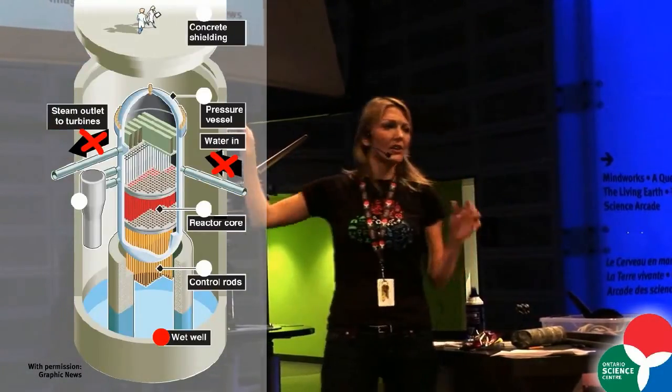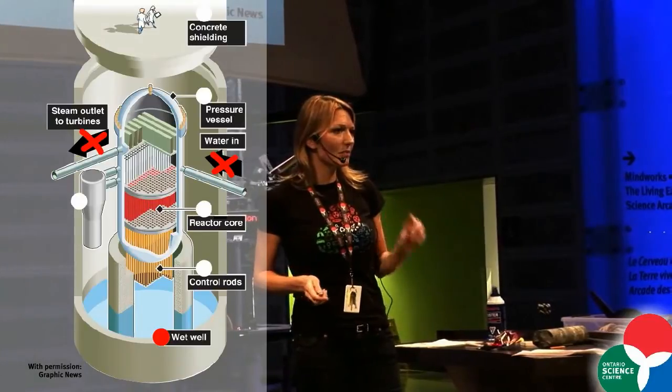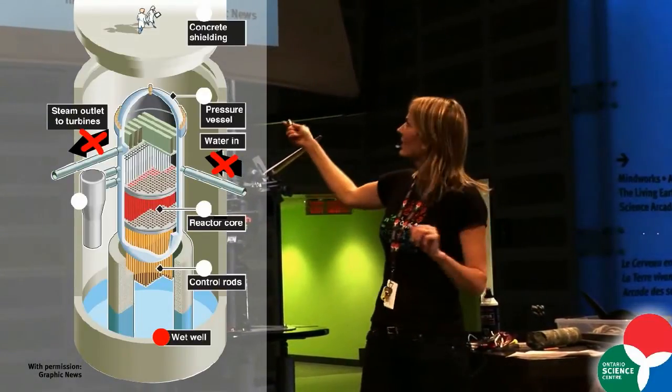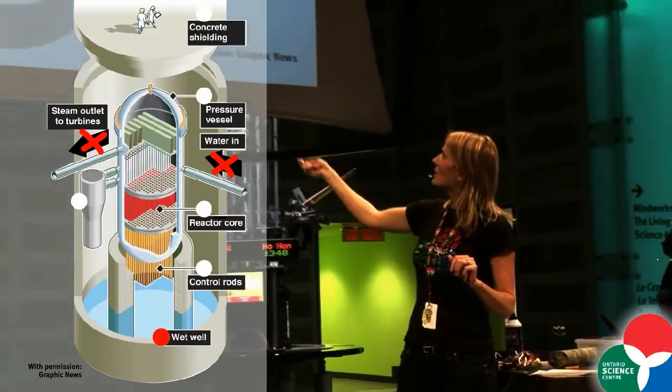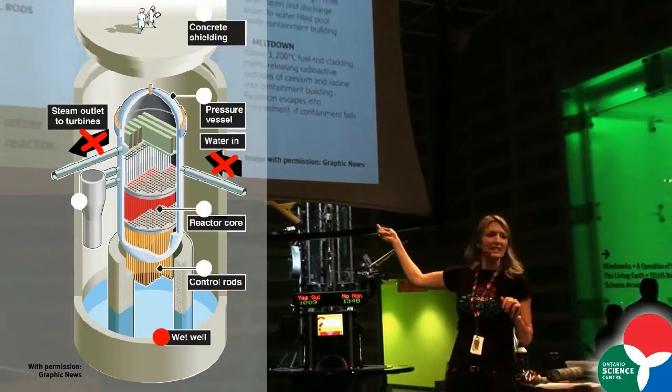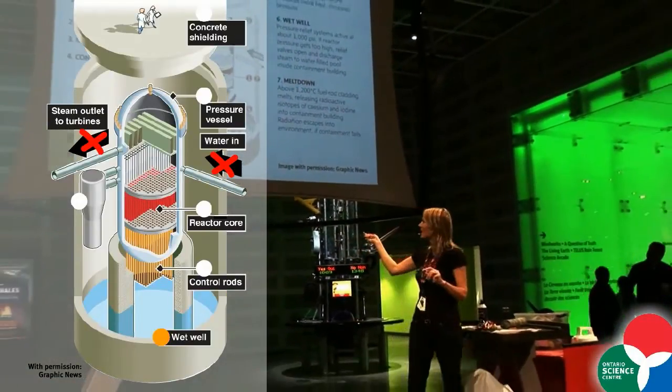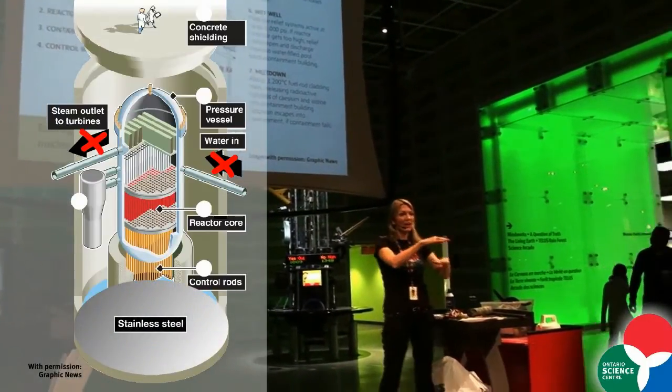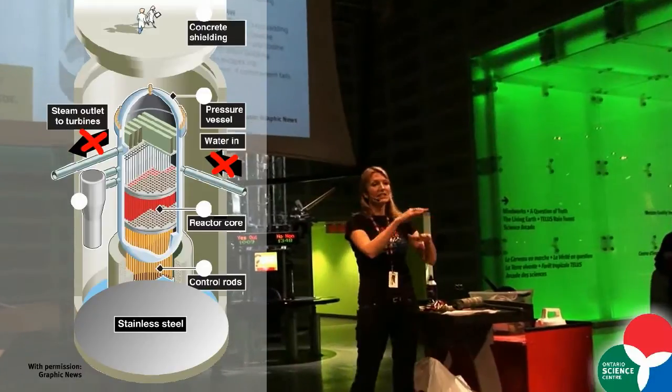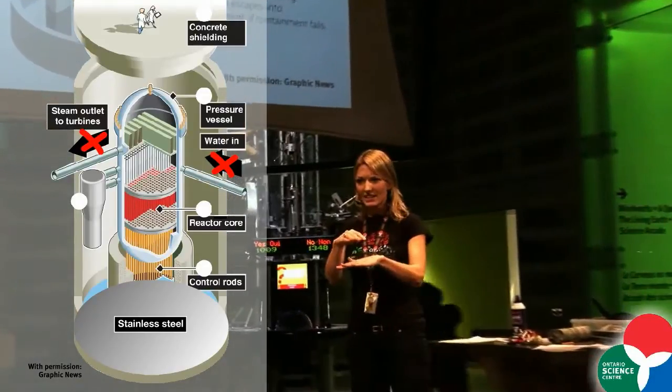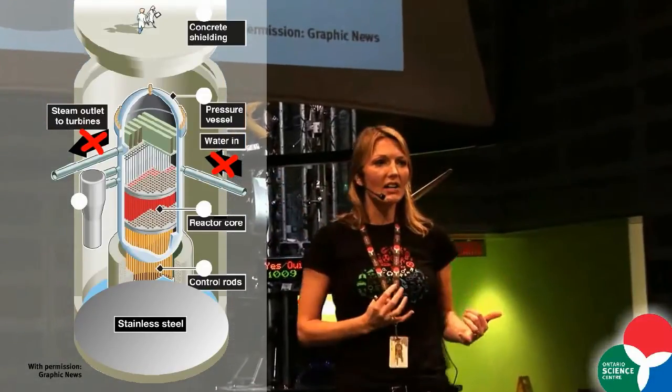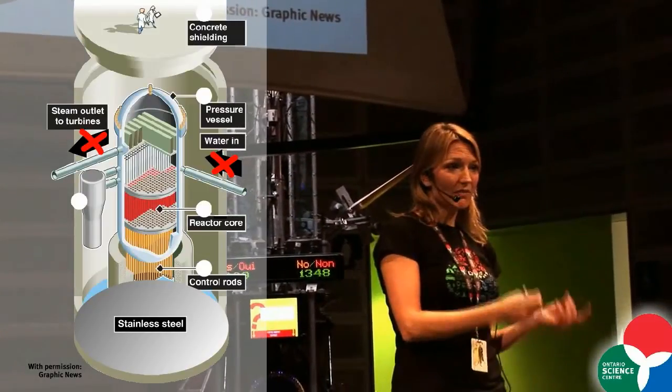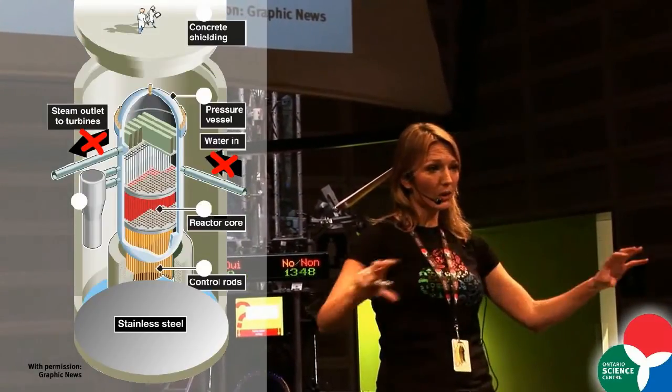But if that were to occur, there are still a few safety measures in place. For example, in this nuclear reactor in particular, the whole nuclear core is cased within stainless steel. And at the bottom here, you have six inches, a six-inch thick layer of stainless steel. Now, steel is a very good conductor of heat. So it's going to remove a lot of heat from that molten radioactive material. So it will hopefully cool it down.